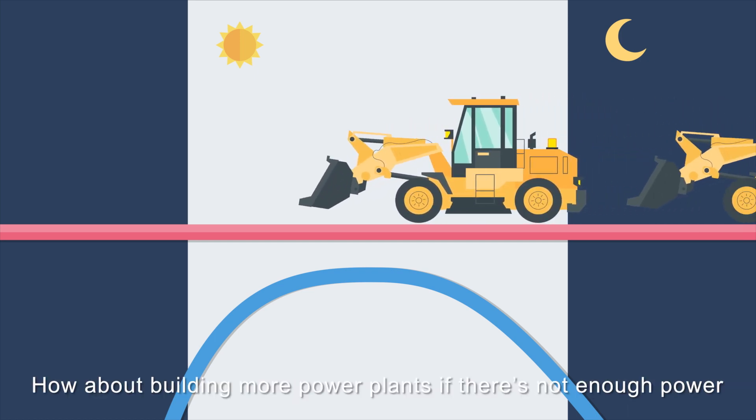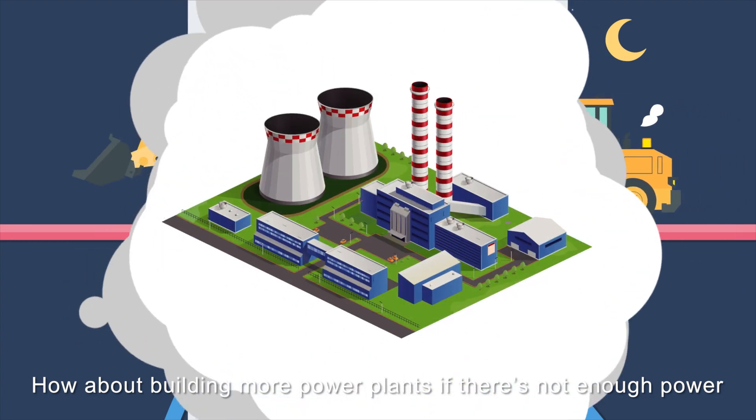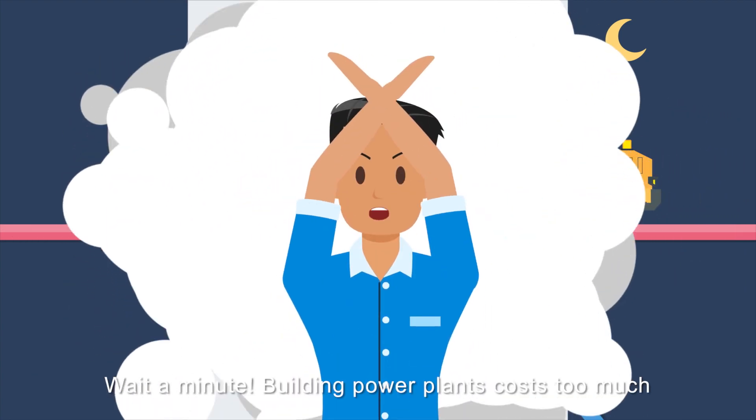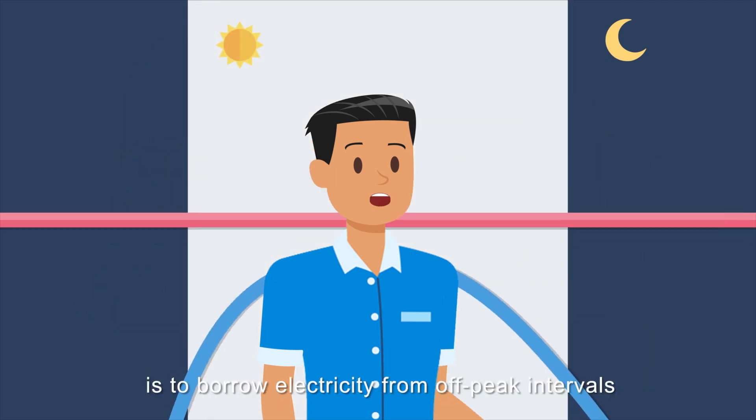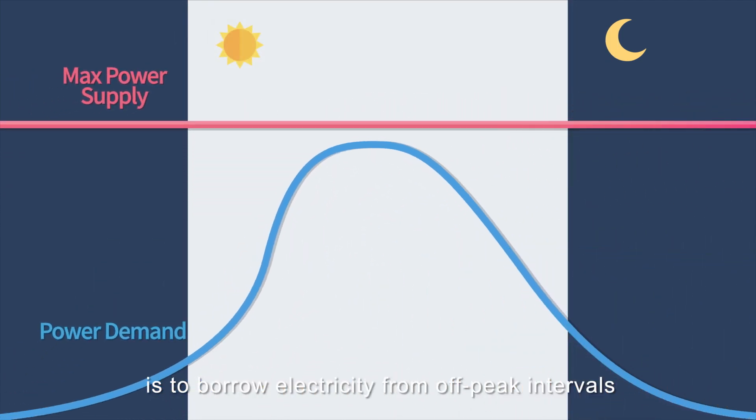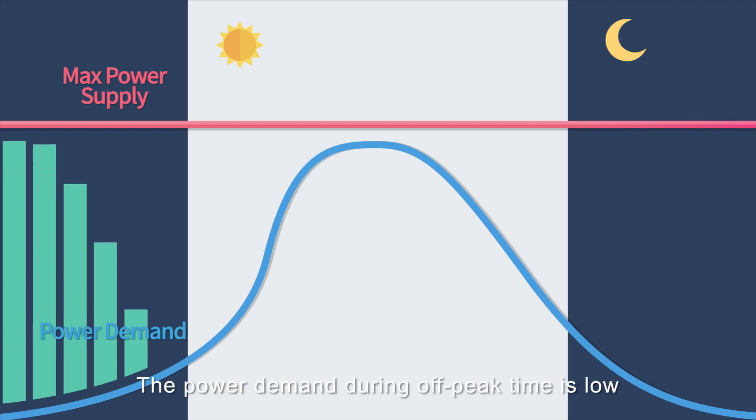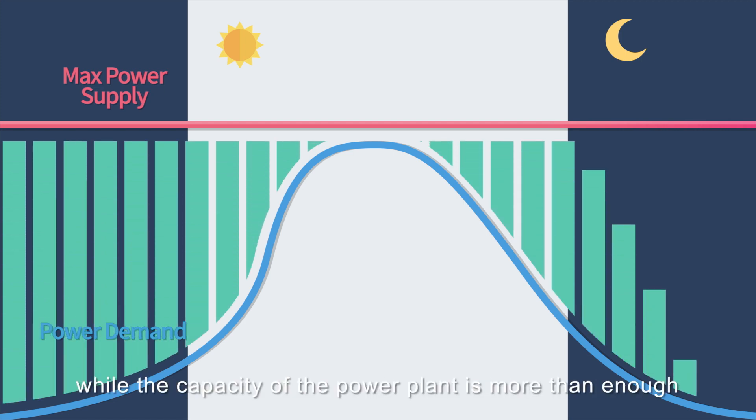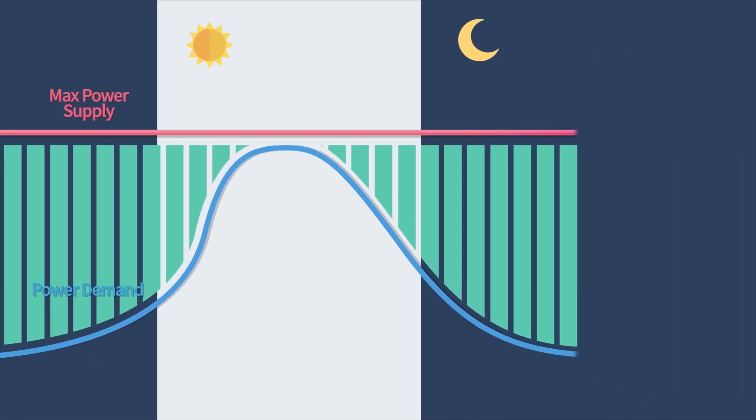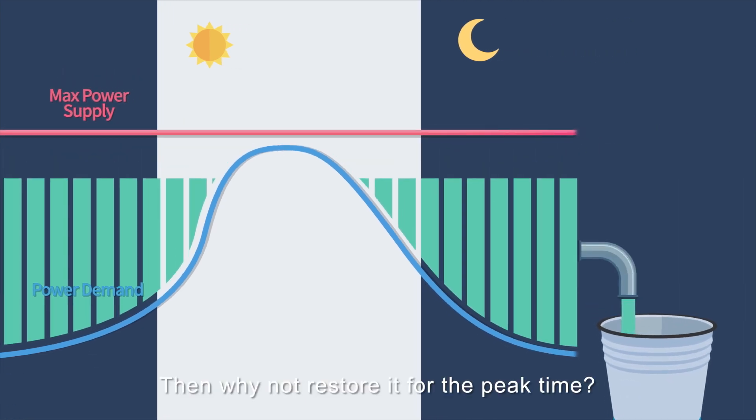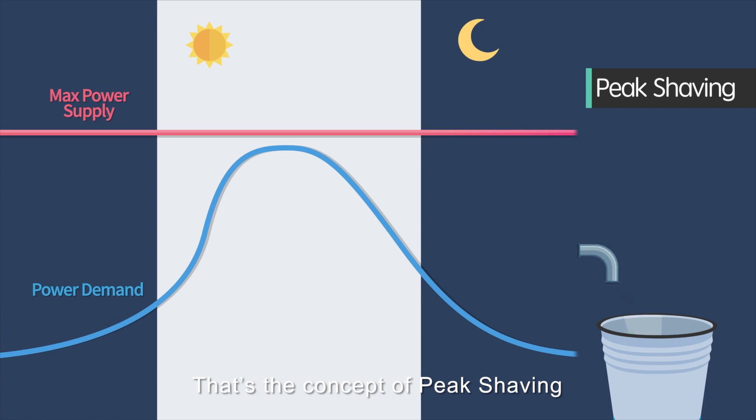How about building more power plants if there's not enough power? Wait a minute! Building power plants costs too much! A more efficient and effective way is to borrow electricity from off-peak intervals. The power demand during off-peak time is low, while the capacity of the power plant is more than enough. Then why not restore it for the peak time? That's the concept of peak shaving.